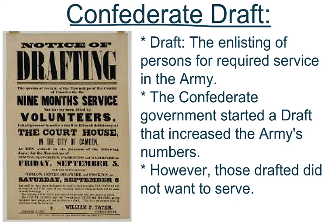After the Battle of Gettysburg, the Confederate Army lost a lot of soldiers, so they proposed a Confederate draft. A draft was the enlisting of persons for required service in the Army. There were no more volunteers — this was required service. You had no choice; the Army needed you, they were going to call you, train you, and you were going to fight. The Confederate government started a draft that increased the Army's numbers to pick their numbers back up for the Civil War.